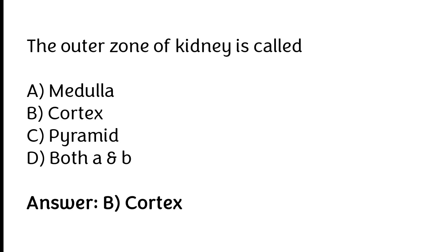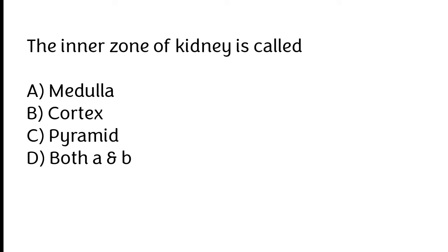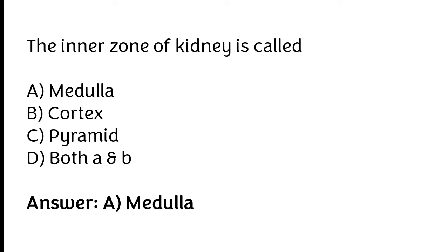The outer zone of the kidney is called: medulla, cortex, pyramid, or both A and B. The correct answer is option B — the outer zone of the kidney is called cortex. The inner zone of the kidney is called medulla.